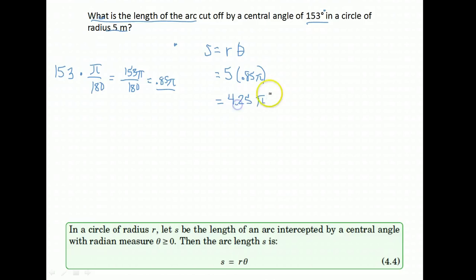And again, unless they ask you to round, it's best to leave it with the pi. If you needed to, you could go ahead and multiply by pi and finish that out. But the less rounding a lot of times, the better off you are. So our answer is 4.25 pi meters. We converted our angle to radian measure rather than degree and multiplied by our radius.